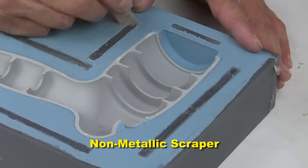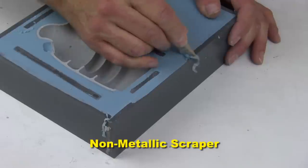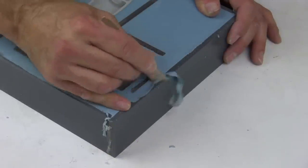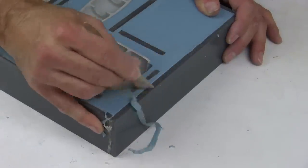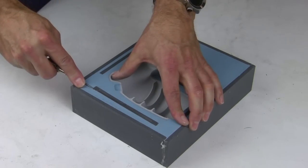Using a non-metallic, sharp plastic scraper does a great job to remove the silicone flashing that has wicked its way under the keys and mold box. The registration keys are then removed from the silicone to reveal a pocket.